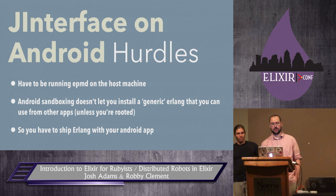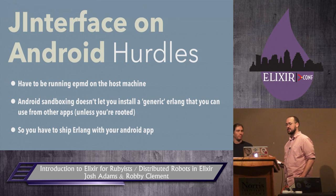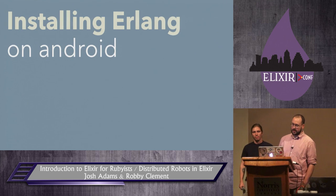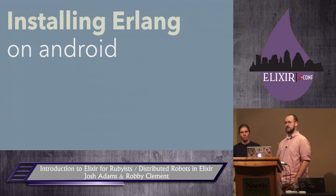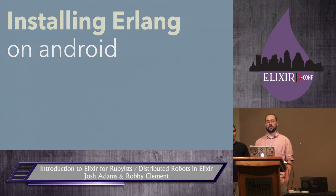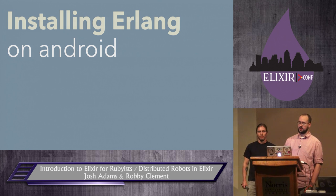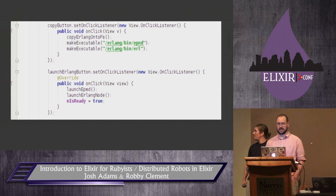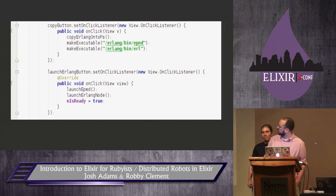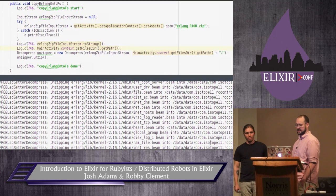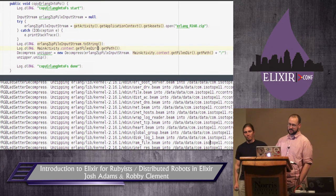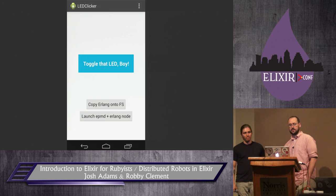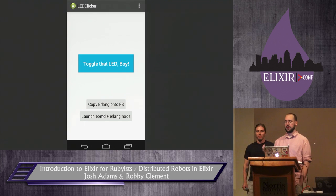There are a few hurdles. First is JInterface — it just doesn't work if you don't have EPMD running on the host. EPMD is the Erlang Port Mapper Daemon — the way Erlang networks know how to talk to each other. That meant we had to figure out how to ship and start Erlang on an Android host. Our application had to launch the processes on the underlying Linux OS under Android because of Android sandboxing. Before we could launch the processes, we had to get them onto the Android file system with our application. Here you can see the code attached to a couple of buttons in our app to copy Erlang onto the file system and launch EPMD as well as just an Erlang node. Ultimately, you end up with an Android app containing a button that triggers JInterface calls — each button press sends a gen_cast to a toggle function on a remote GenServer running on the Raspberry Pi.